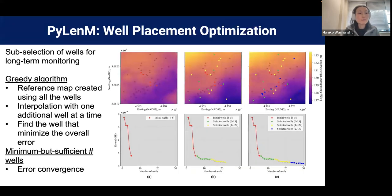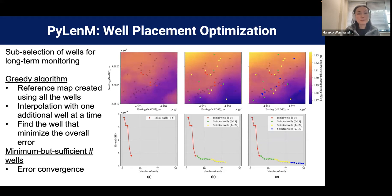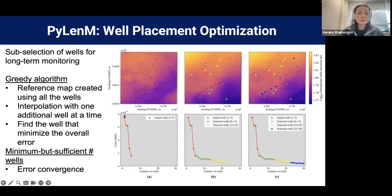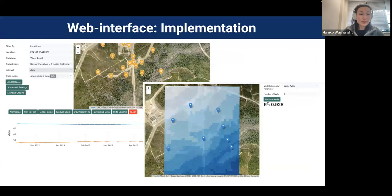We also implemented a well optimization algorithm. At this site we have more than 100 wells and want to reduce that number effectively. Using a greedy algorithm, we know the reference map from the full dataset and place wells to capture heterogeneity — along the gradient for groundwater table, then spread across the region. You can see how overall estimation error decreases as a function of number of wells, and we can evaluate how many wells are sufficient. Perhaps 20 wells could be enough to capture the spatial heterogeneity.